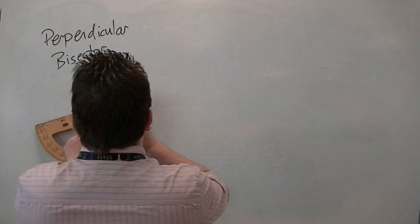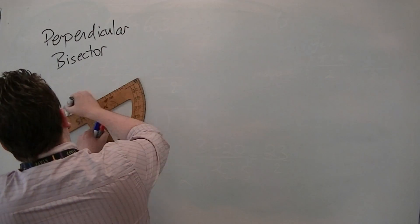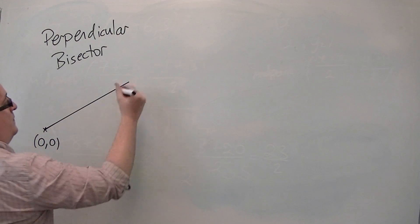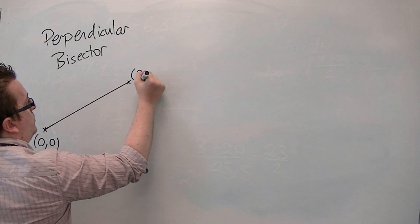For example, what we could look at is, if this is the point, let's say, 0, 0, the origin, and this is the point 2, 3,